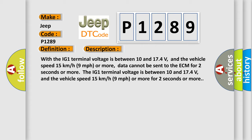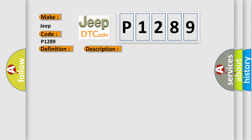The IG1 terminal voltage is between 10 and 174 volts, and the vehicle speed 15 kilometers per hour (9 miles per hour) or more for 2 seconds or more. This diagnostic error occurs most often in the CAN communication system.